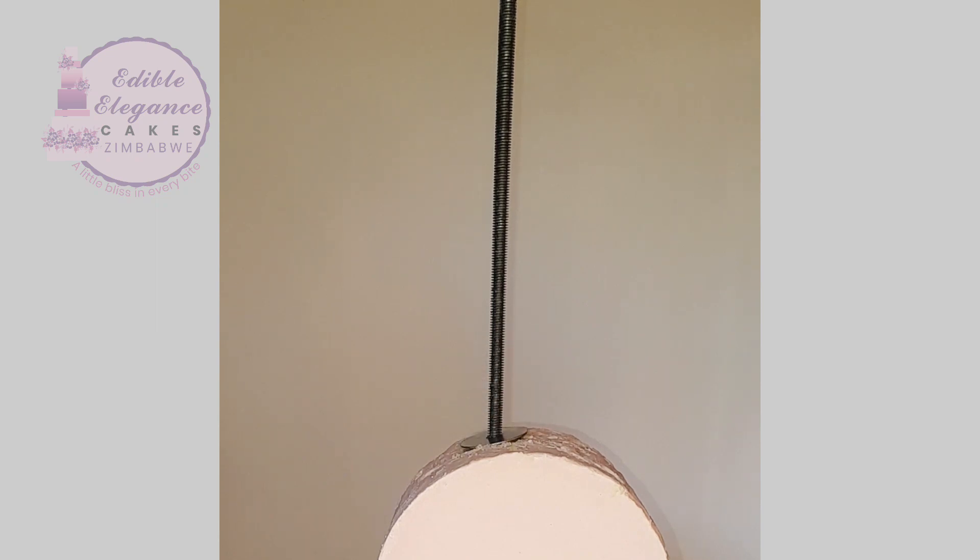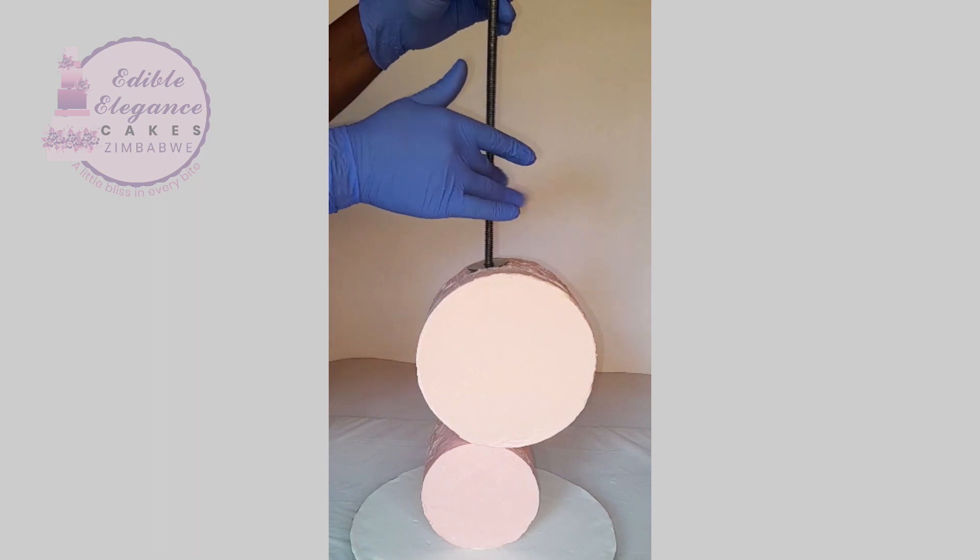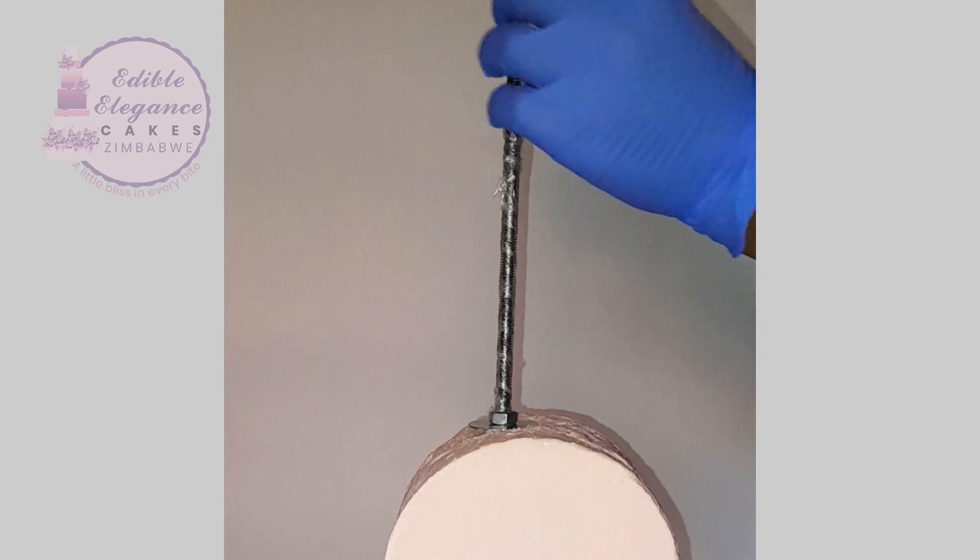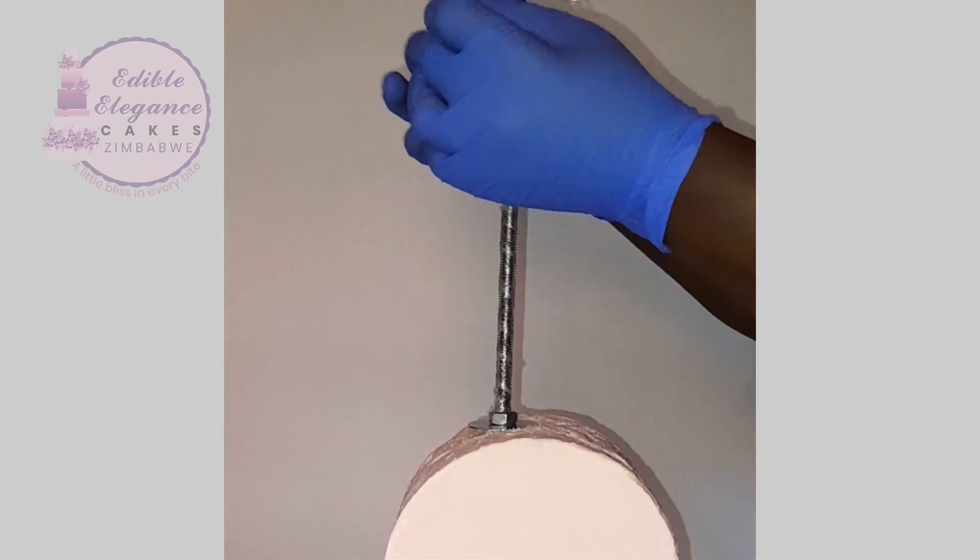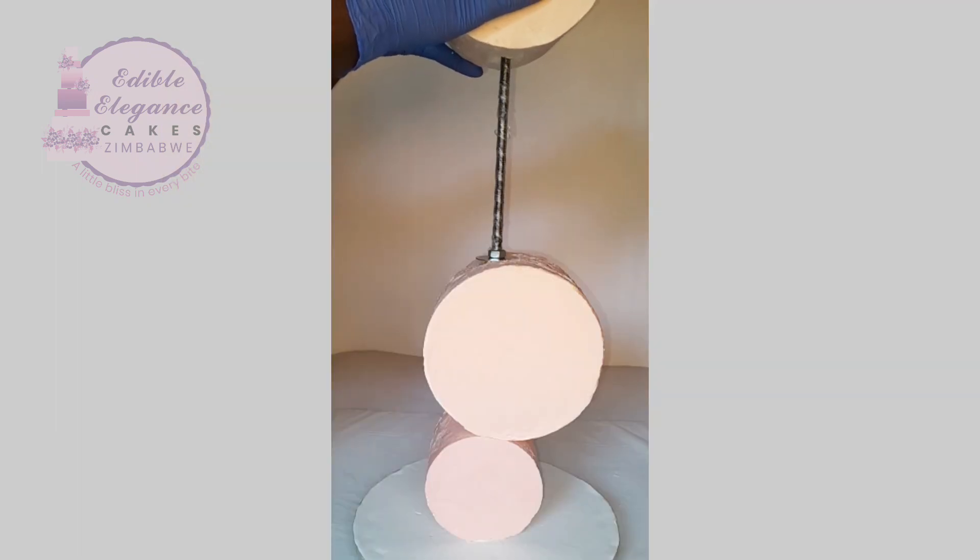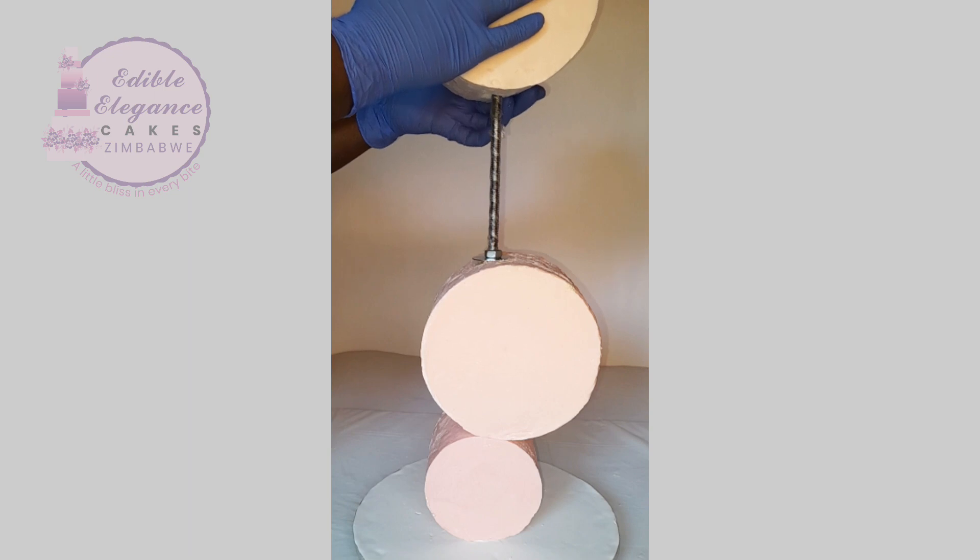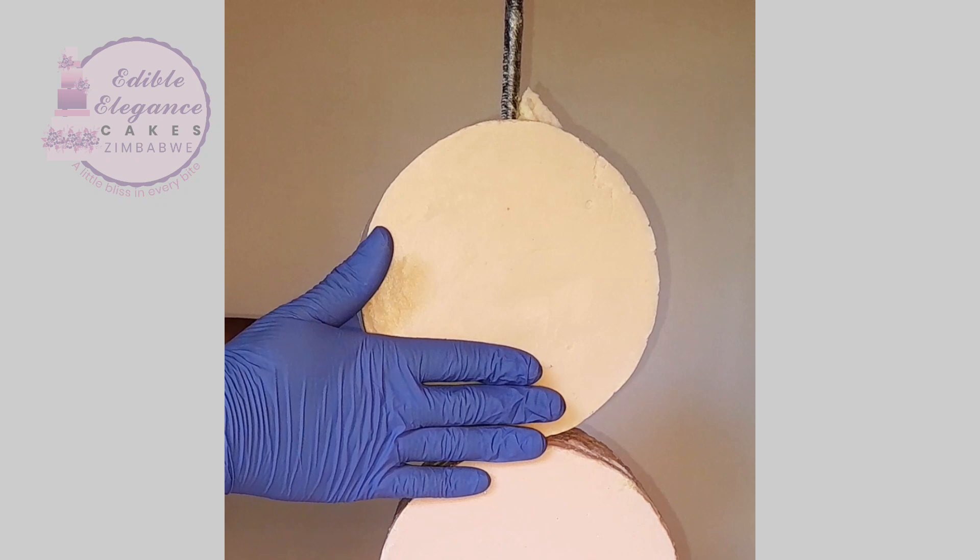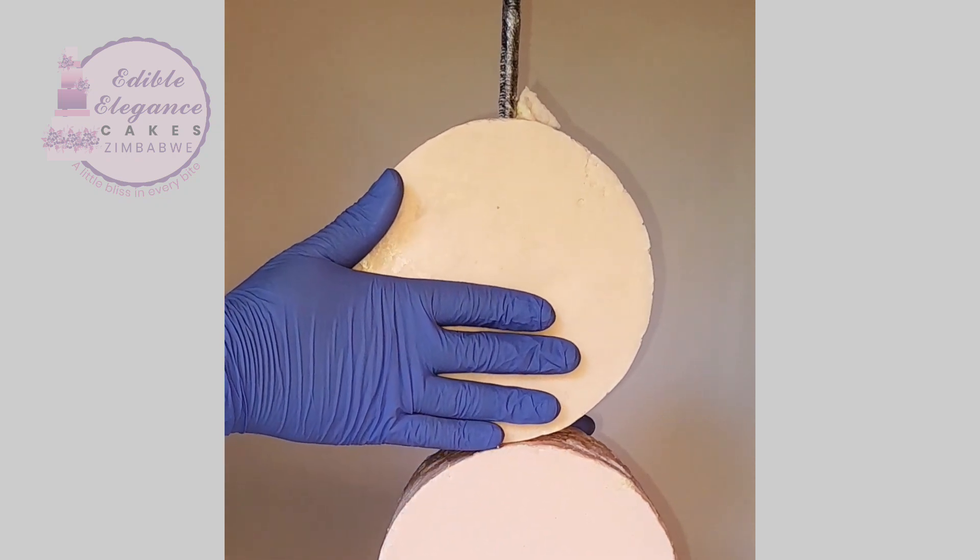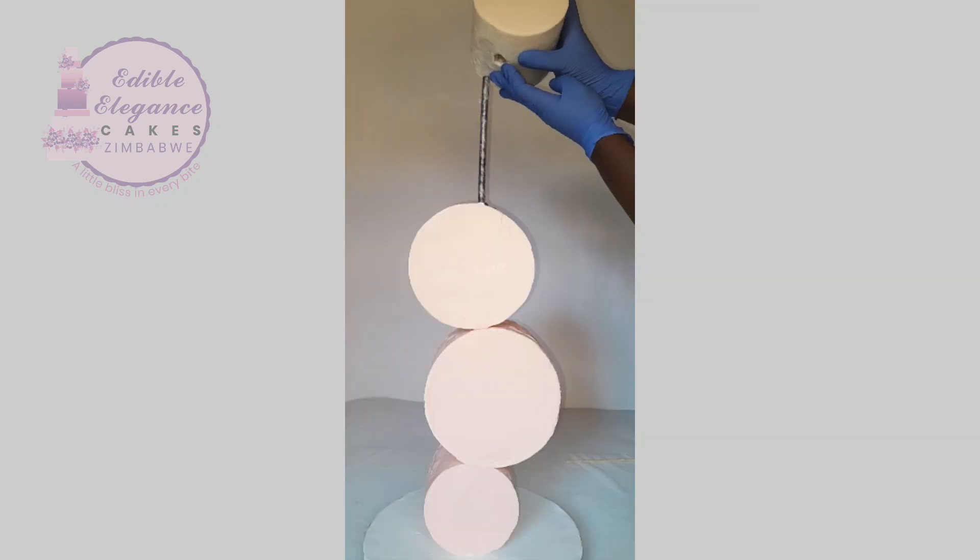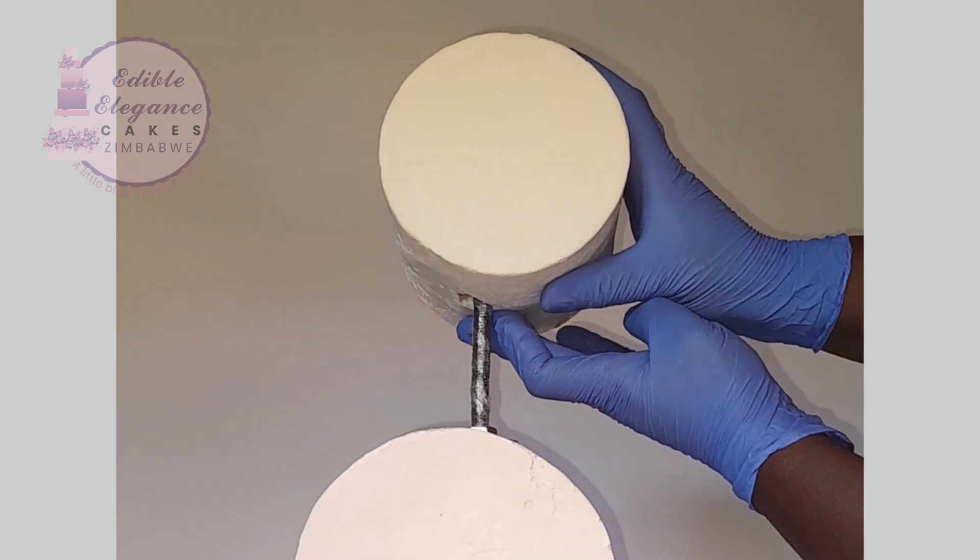The second tier is the one with rice crispy treats and the cling wrapping drill. The six inches tier with styrofoam at the bottom. Top five inches tier is rice crispy treats.